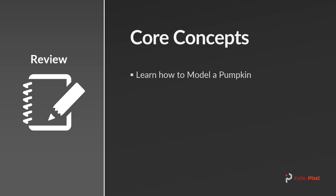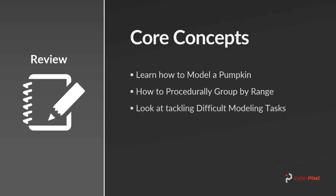We're going to look at how we can procedurally group by ranges — this is very important and gives you a lot of power when it comes to procedural modeling, because then we can always count on the selection of components to be accurate. We're also going to tackle different modeling techniques. Pumpkins are unique in that their skin has these kind of bumped-out peels, and we'll learn how to create that same effect without having to hand model anything.